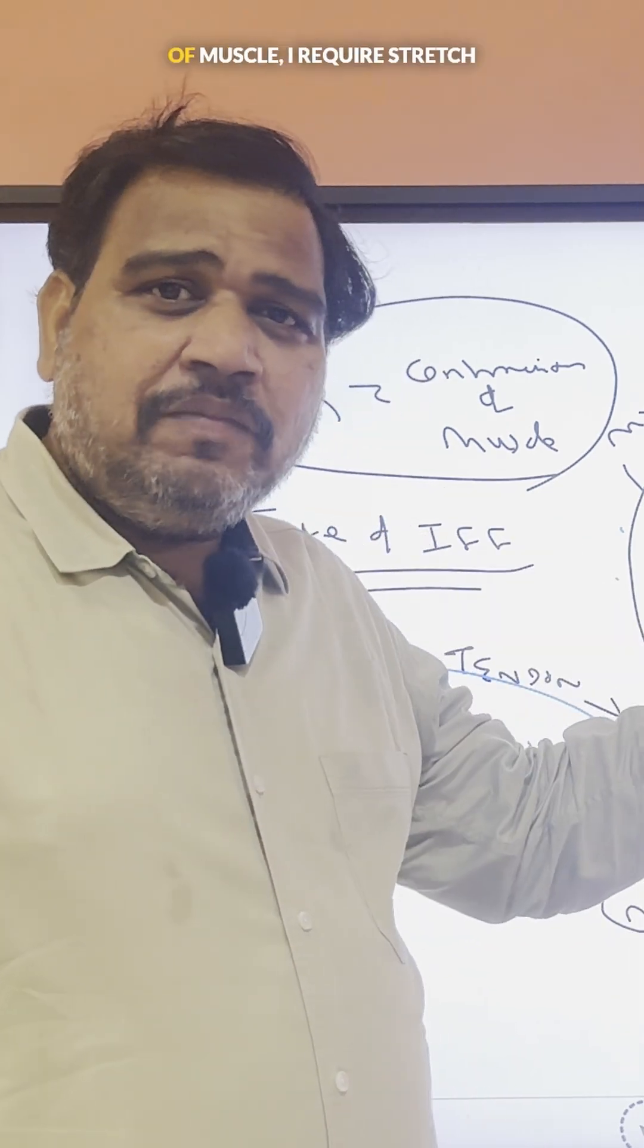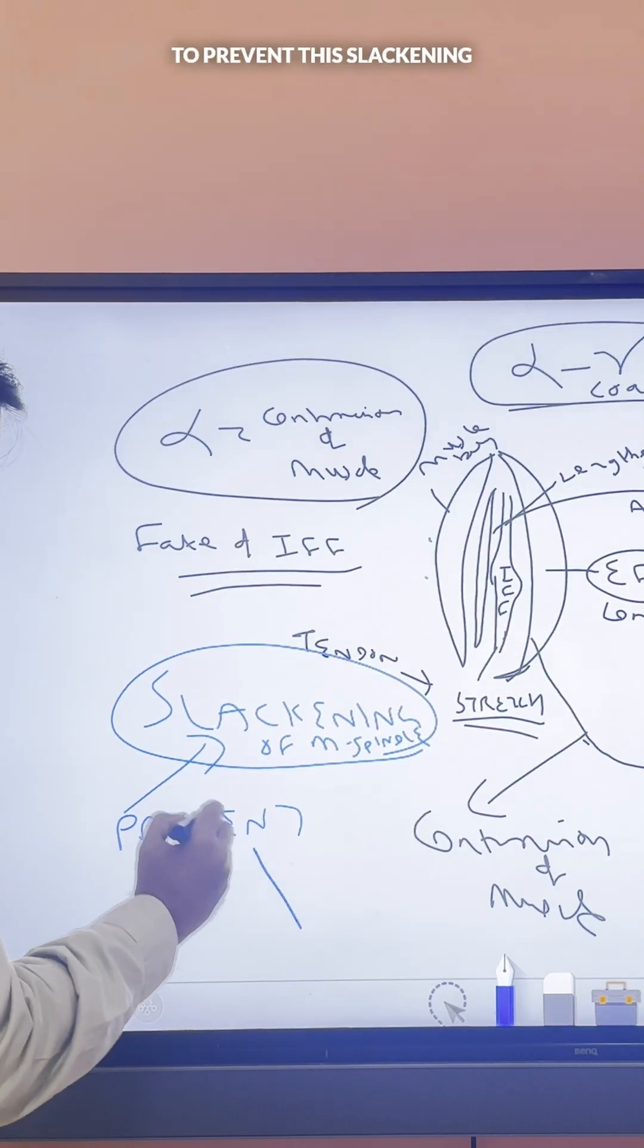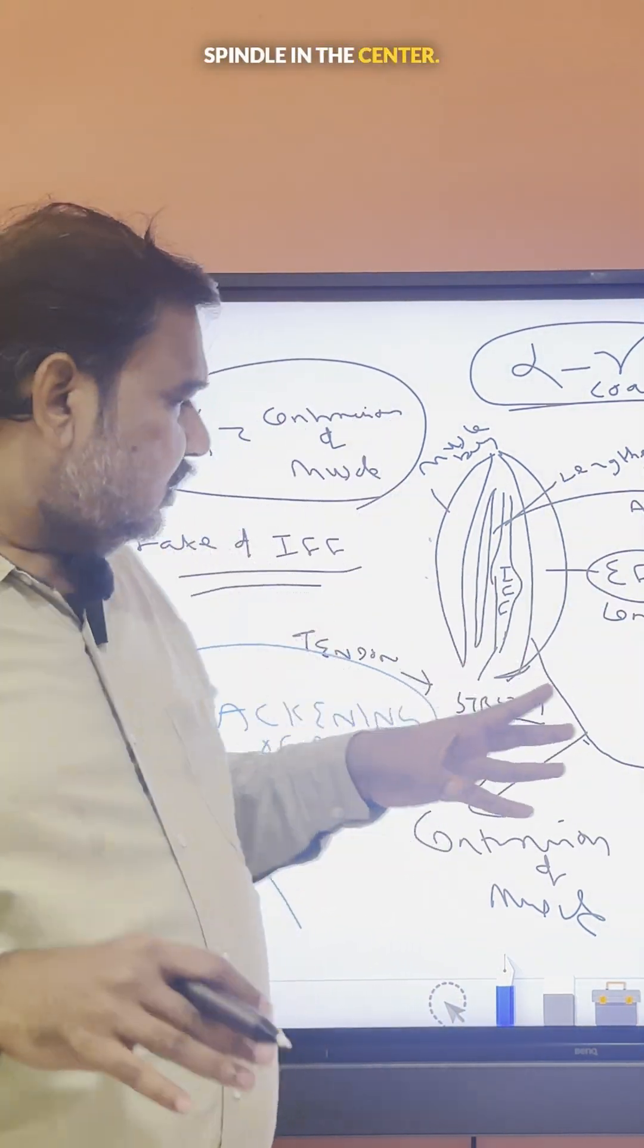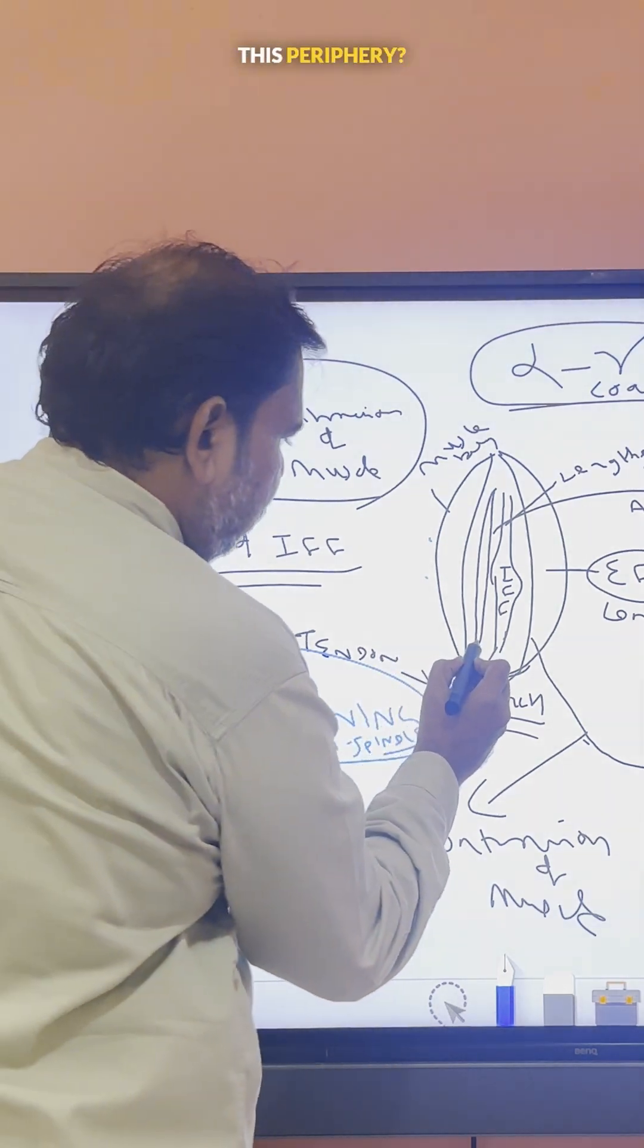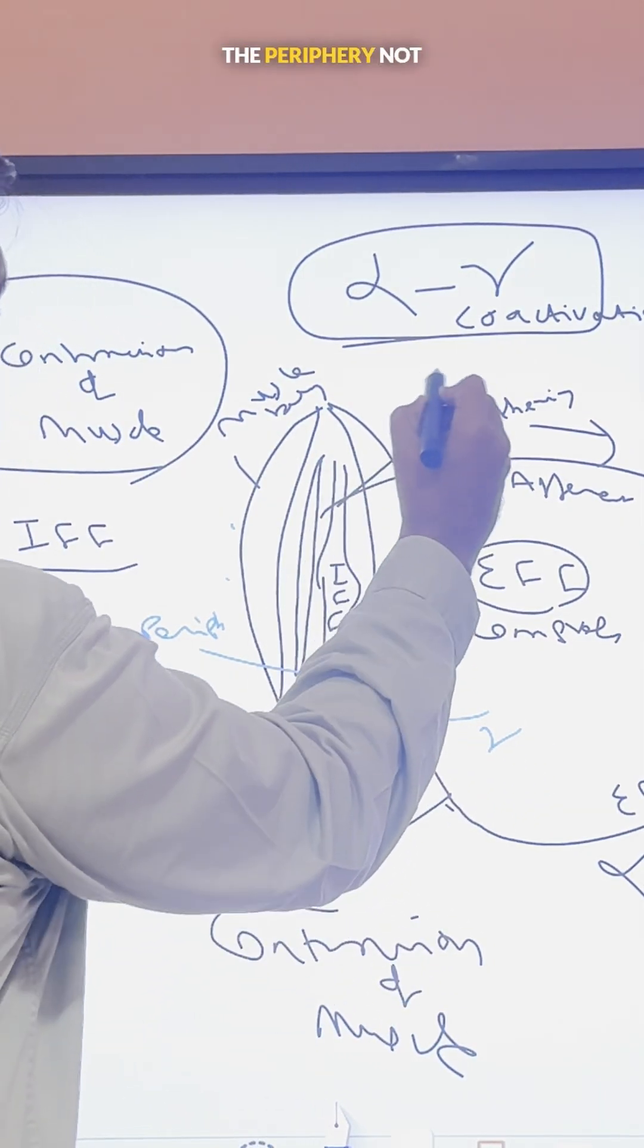But for the contraction of the muscle, I require stretch. To prevent this slackening, or to prevent the contraction of the muscle spindle in the center, what happens? This periphery - this is the periphery of the muscle spindle. The gamma is supplying only the periphery, not the center. Note it down.